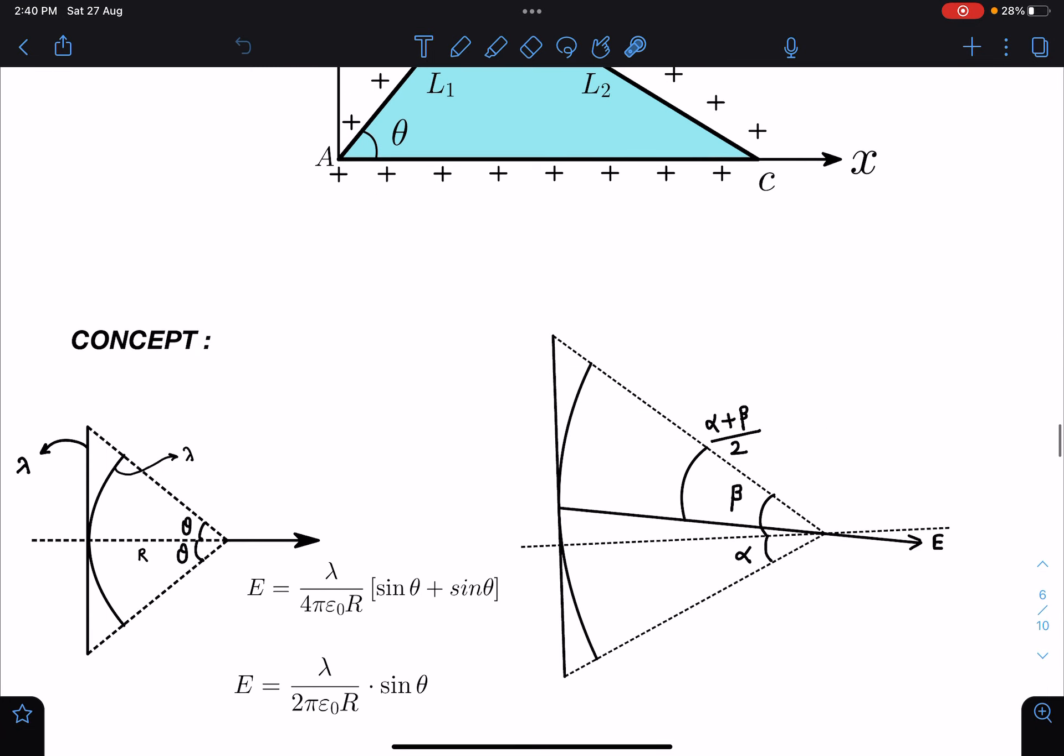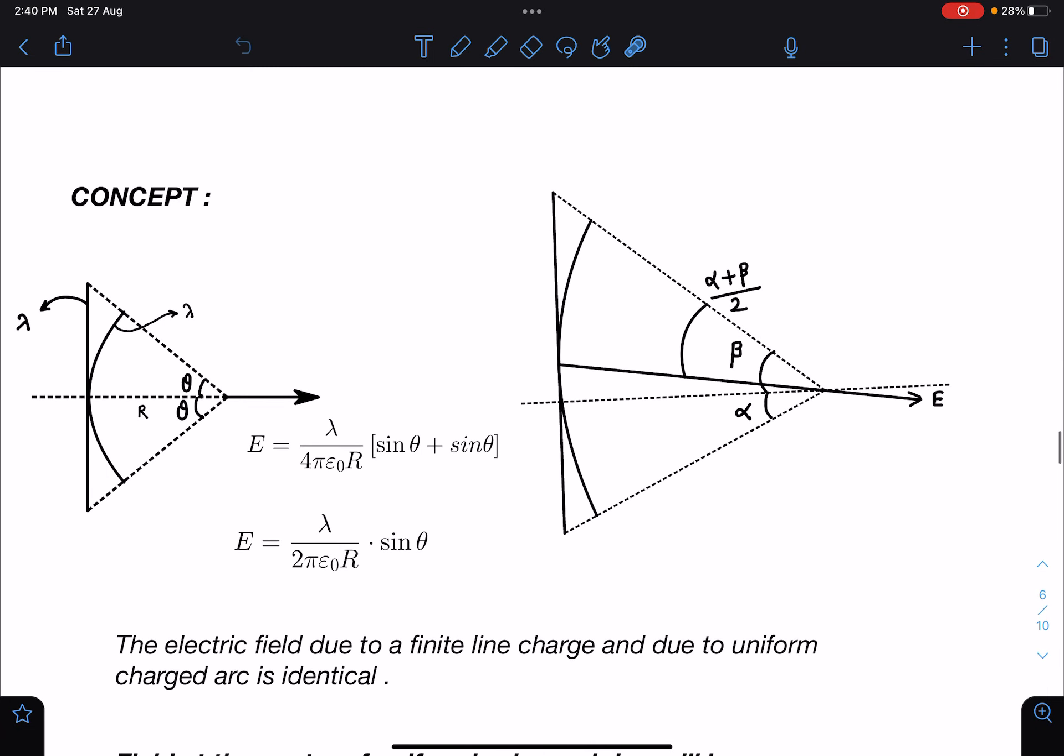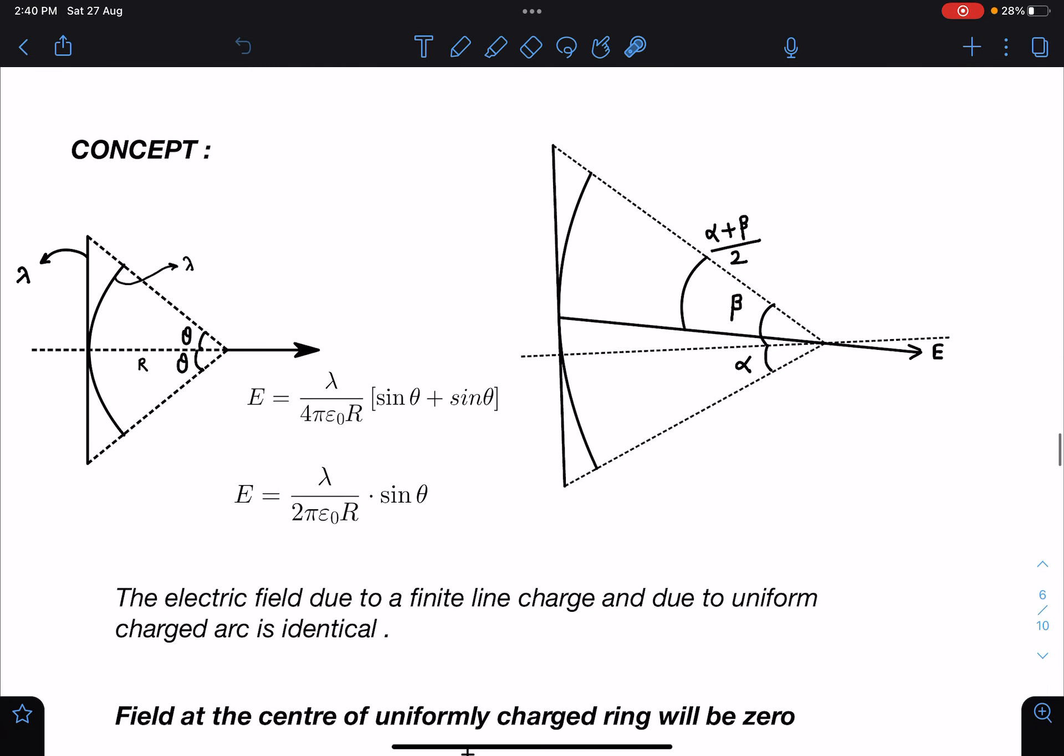Concept-wise in this problem, I have discussed in the class this trick that if any arc is given and the corresponding line charge, if both have same lambda and their extension is making same angle, the endpoints are subtending same angle at a point.